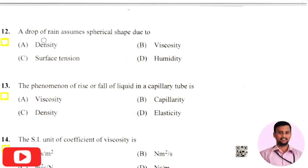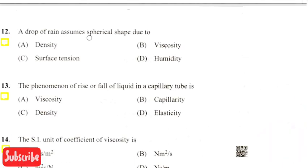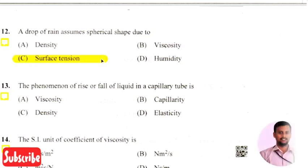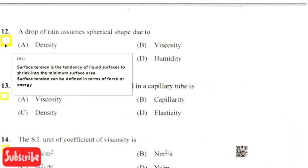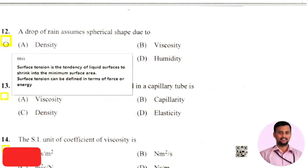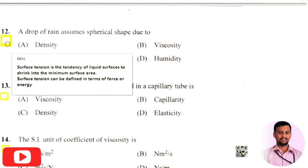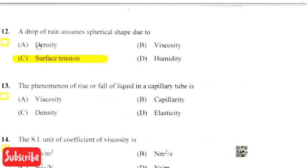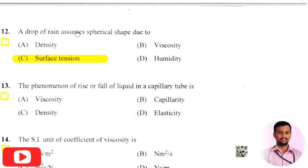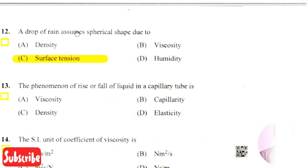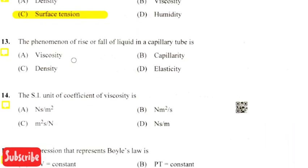The next question: a drop of rain assumes a spherical shape due to — the right answer is option 3, that is surface tension. Surface tension is the tendency of a liquid surface to shrink into the minimum surface area. Due to surface tension, a raindrop assumes a spherical shape.